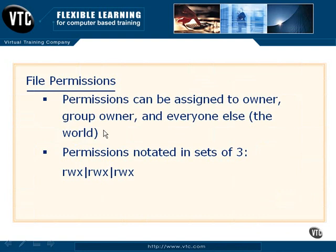There are actually three pieces to this puzzle of permissions. We assign to the owner, the group owner, and then everyone else — which is basically anyone that can get access to the file. When you see permissions laid out, they'll be laid out in groups of three: the first is the owner, the second is the group owner, and the final is the everyone group.